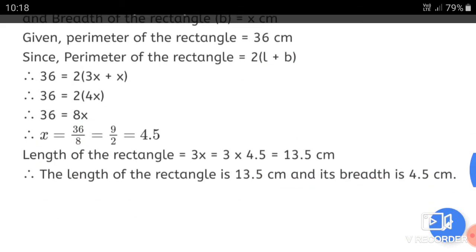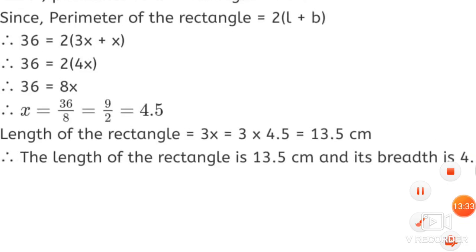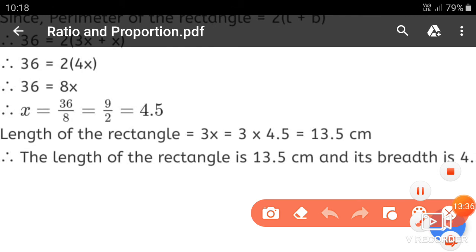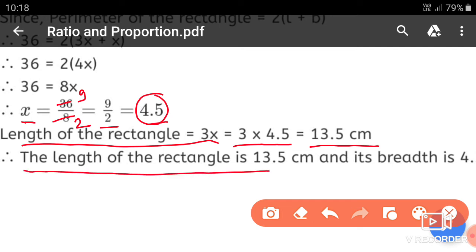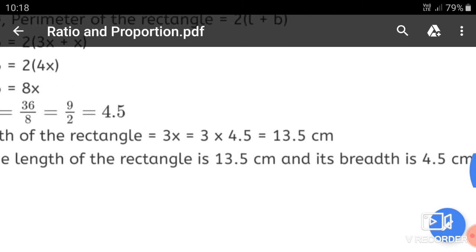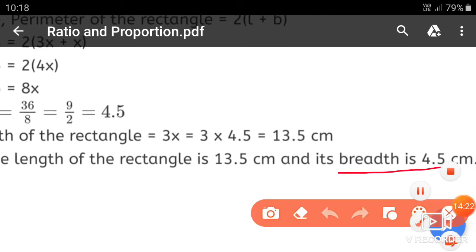Therefore x is equal to 36 upon 8. Simplifying to smallest form by dividing by 4: 36 divided by 4 is 9 and 8 divided by 4 is 2, so x equals 9 over 2, which is 4.5. Therefore the length is 3x equals 3 into 4.5 equals 13.5 cm. The breadth is 1x equals 4.5 cm.